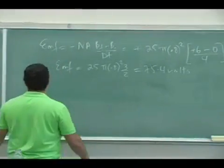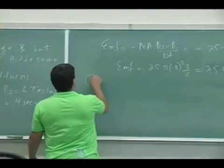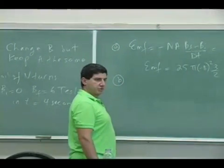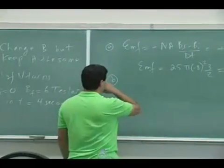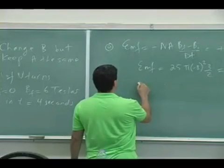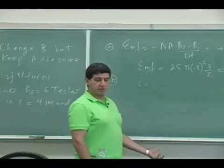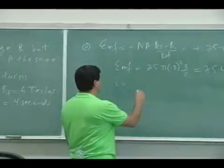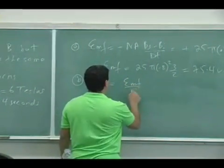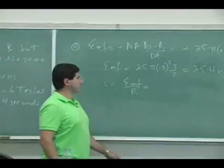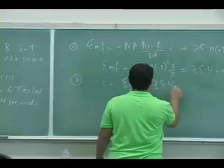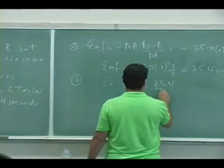OK, so 75 volts. Then in part B, it's asking us, what was it? Find the current induced, right? Well, the current induced in the coil is just the EMF around the coil divided by its resistance. So 75.4 over resistance of 12.